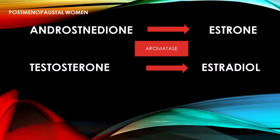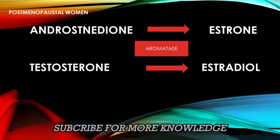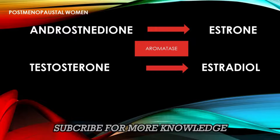The mechanism of action of letrozole 2.5 mg for postmenopausal women: androstenedione is converted to estrone, and similarly testosterone is converted to estradiol. Here, aromatase inhibits this action, so no further production of estrone and estradiol, which are the hormones responsible for postmenopausal effects.